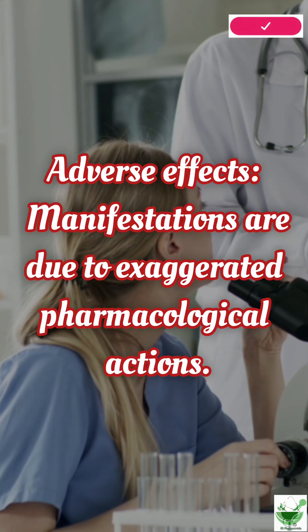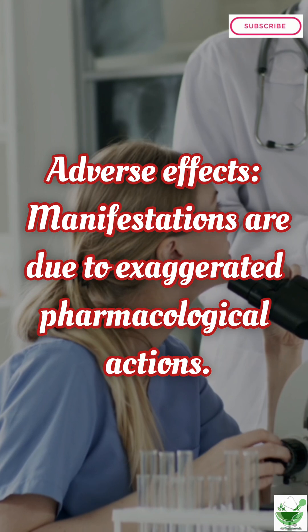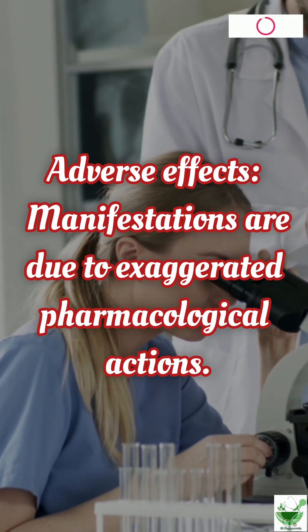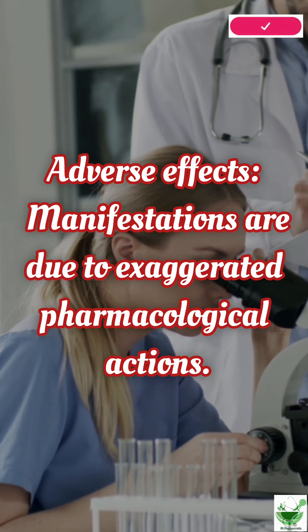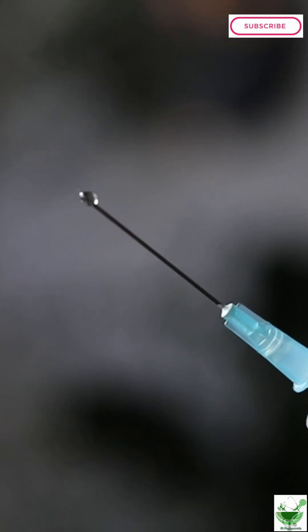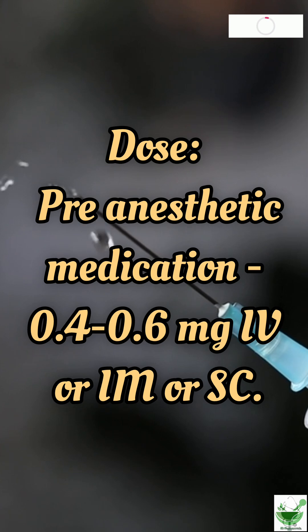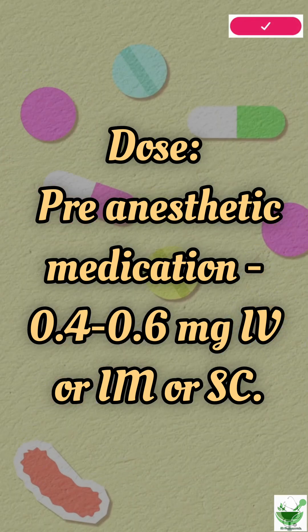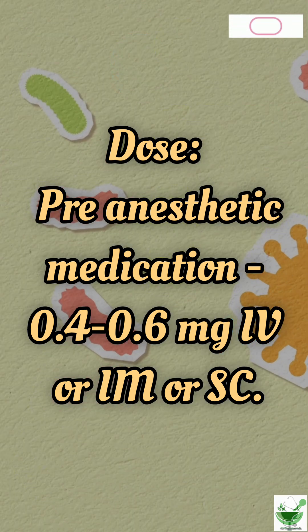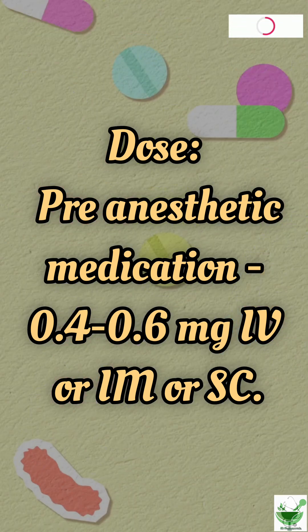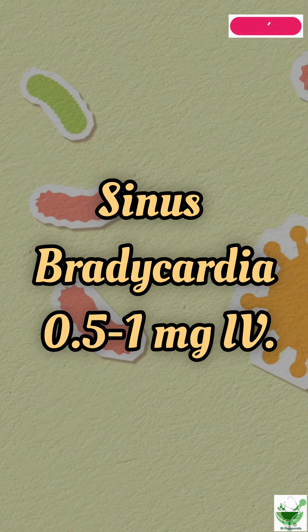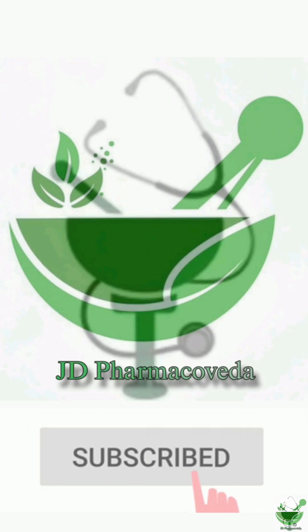Adverse effects are due to exaggerated pharmacological actions. Dosage: Pre-anesthetic medication 0.4–0.6 mg IV, IM, or SC. For sinus bradycardia: 0.5–1 mg IV.